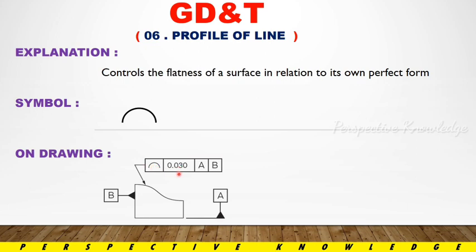The profile of line has two datums: datum A and datum B. Datum A is the profile on the left, and datum B is the profile on the side.